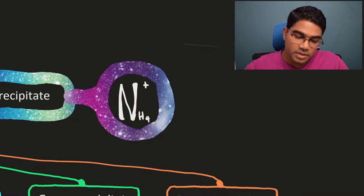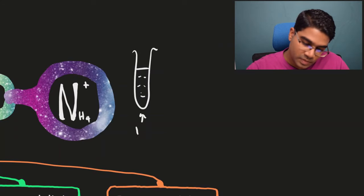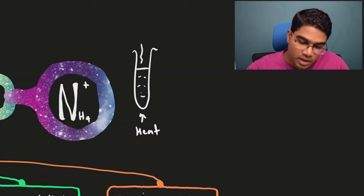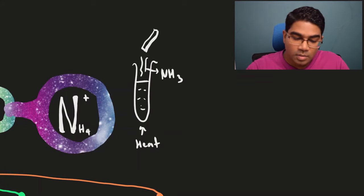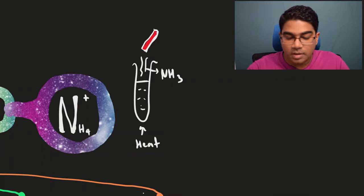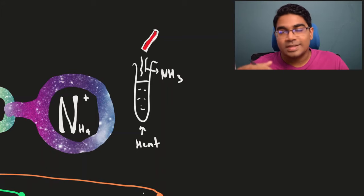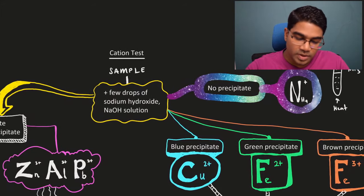How do we confirm this? By heating up the sample. When we heat up the sample, if there is ammonium ion, what will happen is ammonia gas will be evolved. How do we test for ammonia gas? By using a moist red litmus paper. The observation here will be that red litmus paper will turn blue because ammonia gas is alkaline. So this is if there is no precipitate.